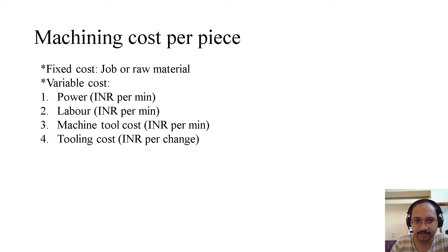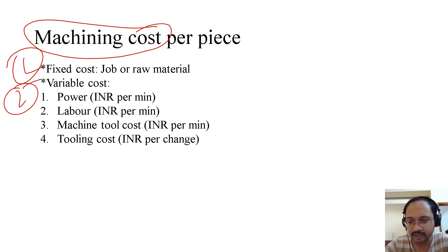Coming to machining cost per piece. So machining cost are two types: one is the fixed cost, another is the variable cost. Fixed cost is the cost of the job or the cost of the raw materials. Whereas variable cost is the electricity, that's the power needed, which is in rupees per minute. The labor required, whether you require a skilled operator, how skilled the operator would be and how much cost we have to spend for the operator. So the labor cost is INR per minute.